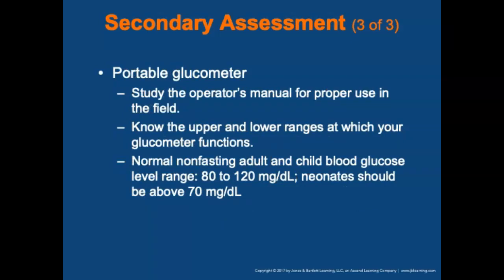For the portable glucometer, study the operator's manual for the device you'll use in the field and know the upper and lower ranges. Normal non-fasting adult and child blood sugar levels should range between 80 to 120 mg/dL. Neonates should be above 70 mg/dL.